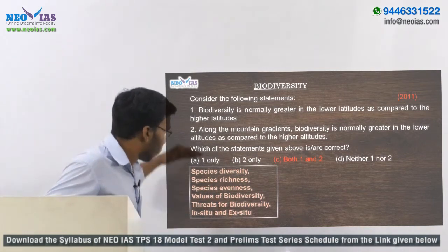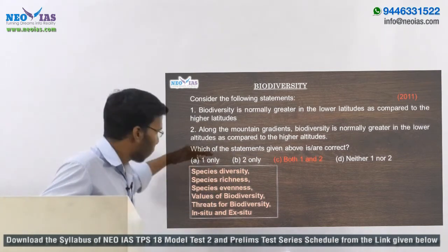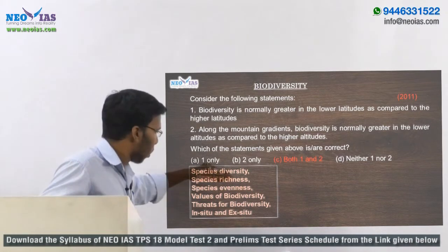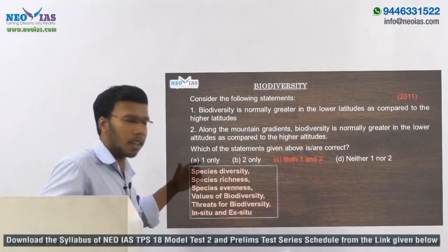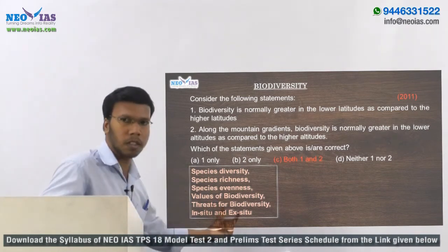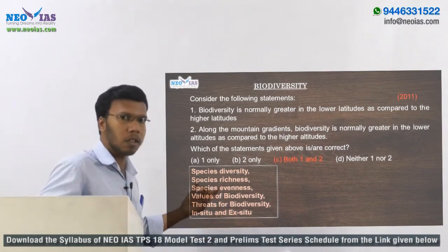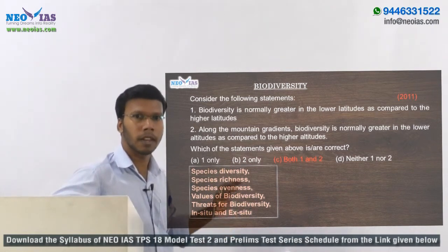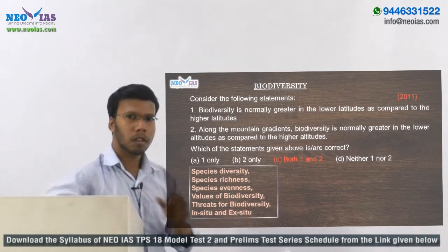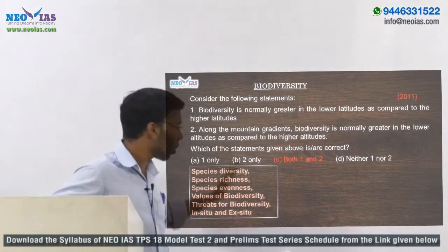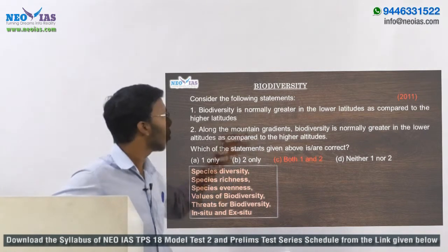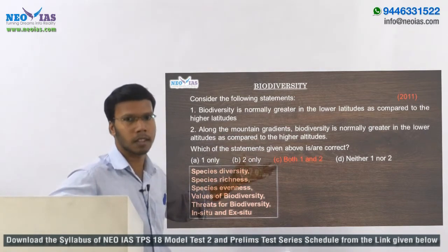Key biodiversity topics include: species richness, species evenness, values of biodiversity, main threats to biodiversity, and conservation methods — both in-situ and ex-situ conservation. These are the main areas, but you also have to go through other topics under biodiversity or ecosystem as well.